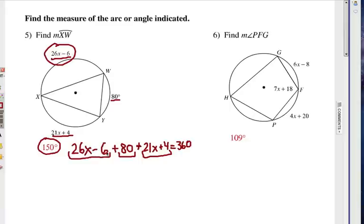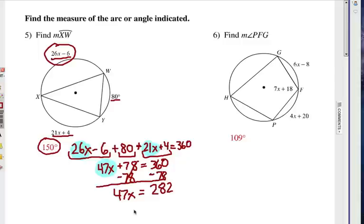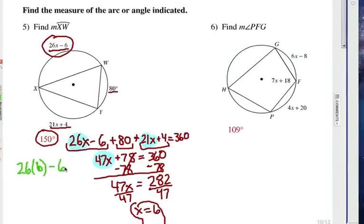So these are our three arcs added together to give us 360. Now we're going to be combining our like terms, those are our x terms there, and our constant terms. That's our first step. So that will give us 47x plus 78, and the 78 comes from a negative 6 plus 80 plus 4. Now let's subtract 78 from each side. And then we divide each side by 47.